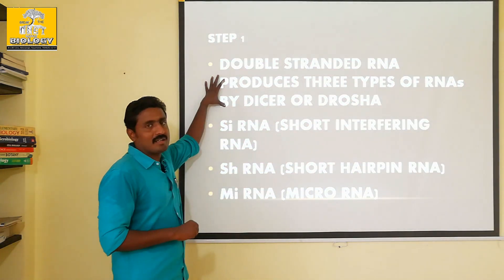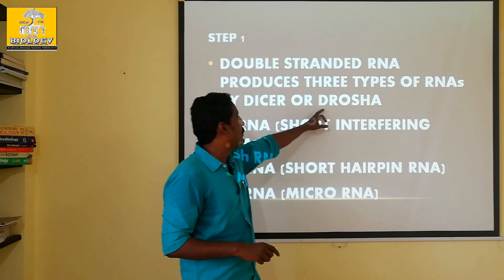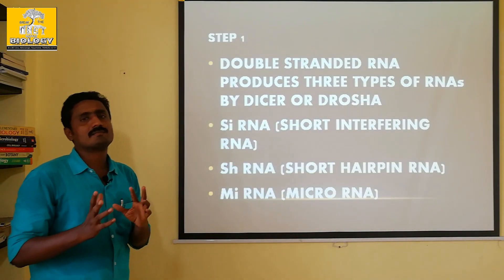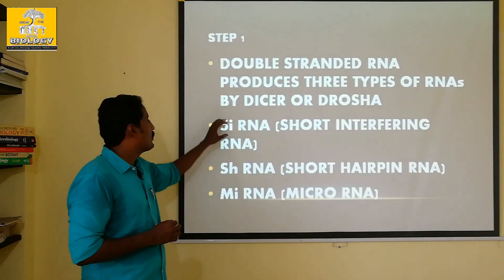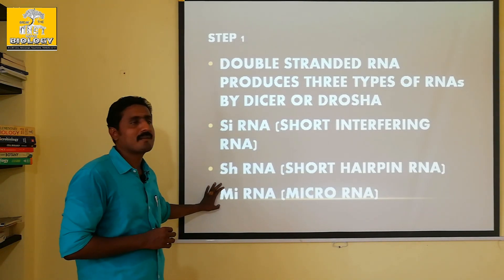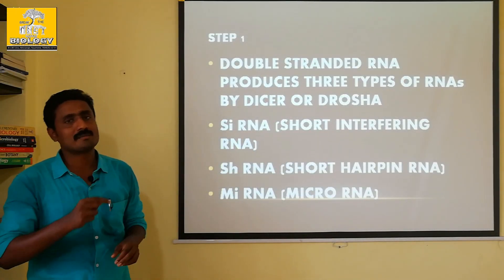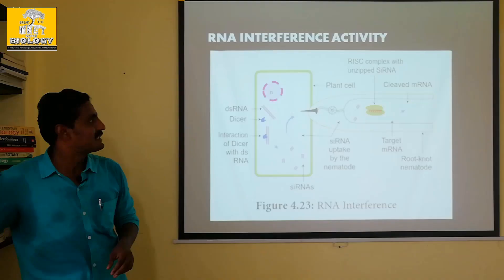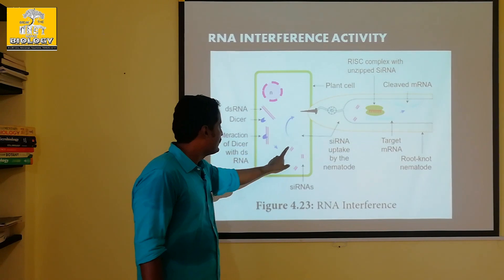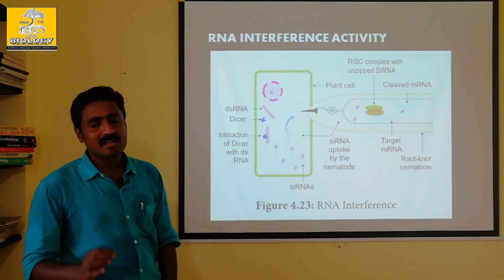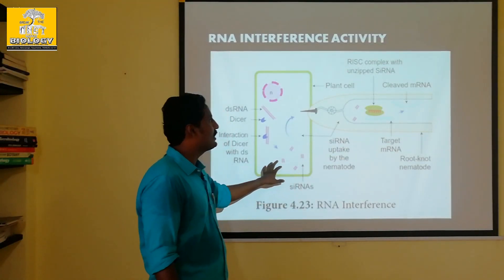One double-stranded RNA form is processed by enzymes called Dicer or Drosha — there are 2 types. There are 3 types of RNA sequences in RNA interference: siRNA, shRNA, and miRNA. That is the abbreviation. Let's look at the example of siRNA. siRNA is a double-stranded form.